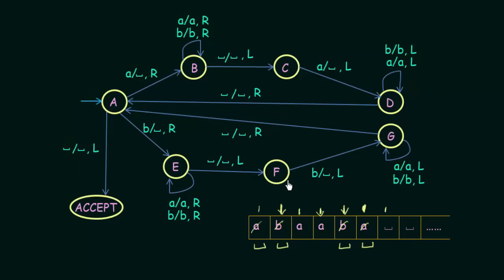In state F, if we get B, we replace it with a blank and move one step to the left. If instead we get A in state F, there is no transition, so it goes to the reject state — because the second symbol was B, the second-to-last symbol must also be B for it to be an even palindrome. After replacing B with blank, we enter state G, where we keep moving to the left until we encounter a blank, then replace blank with blank and move one step to the right.